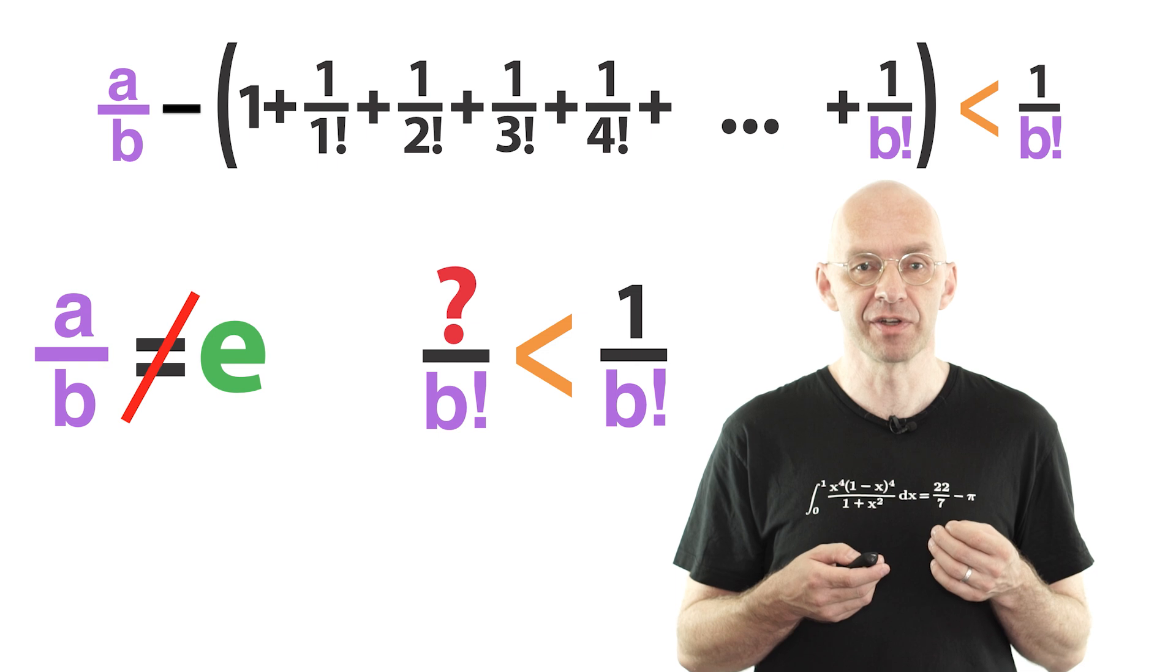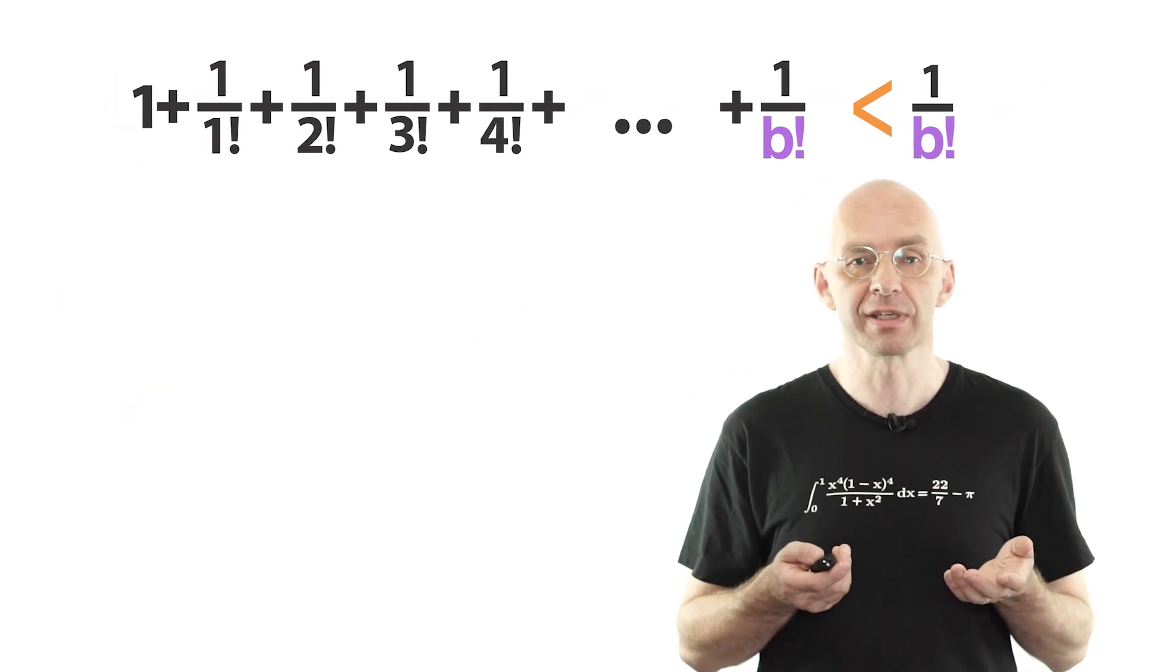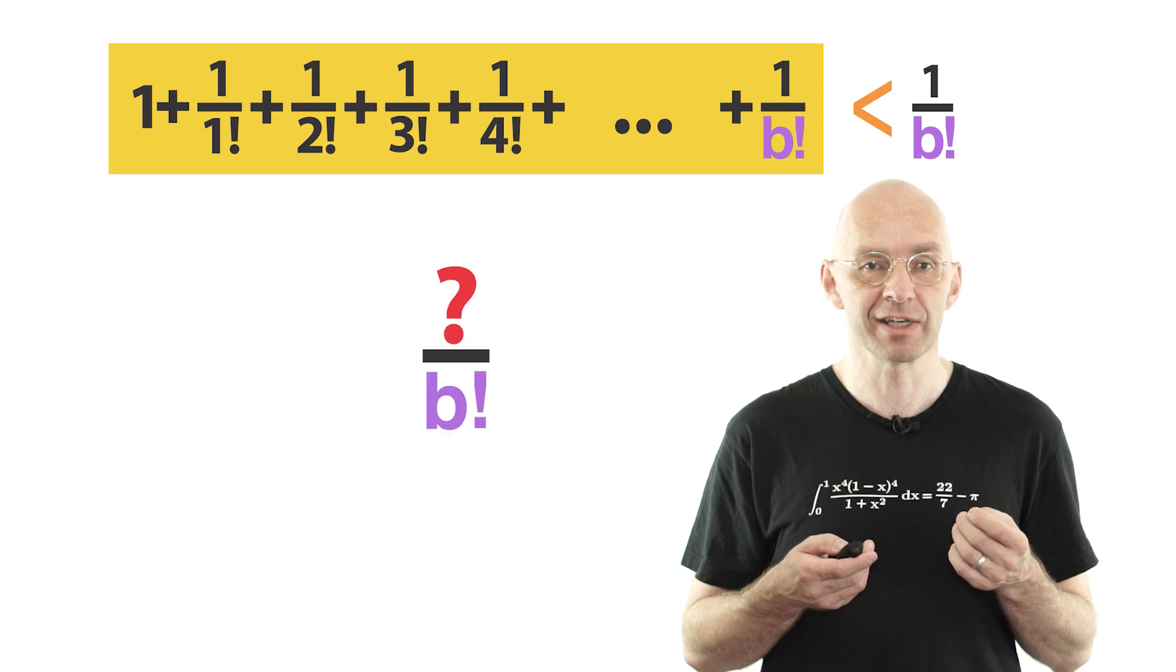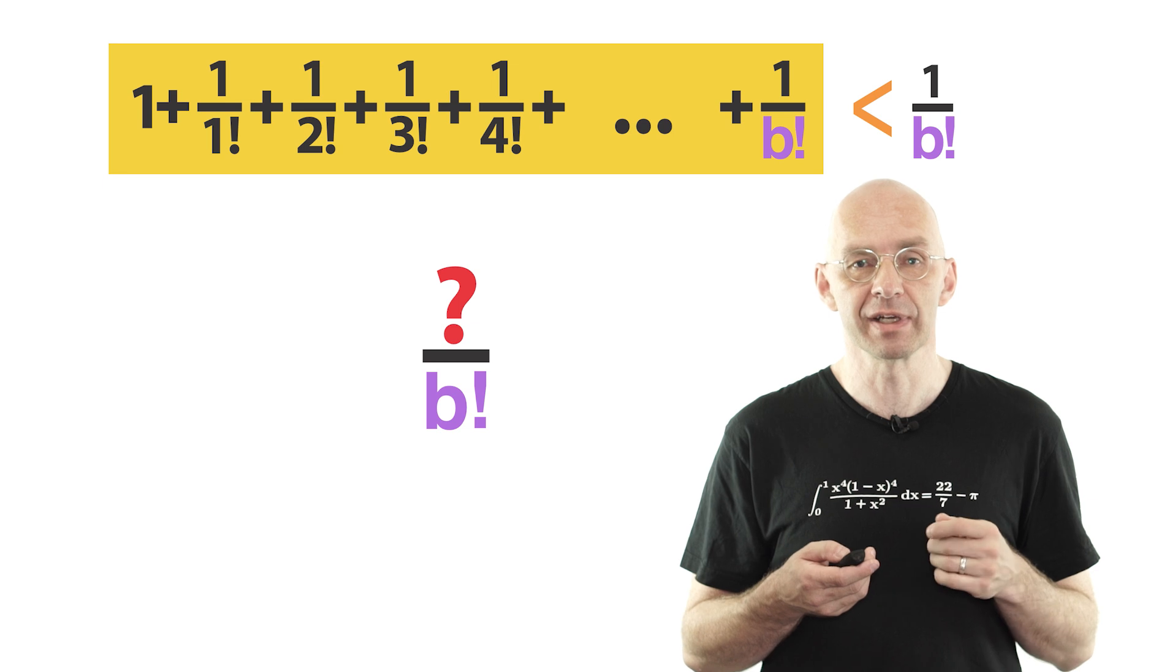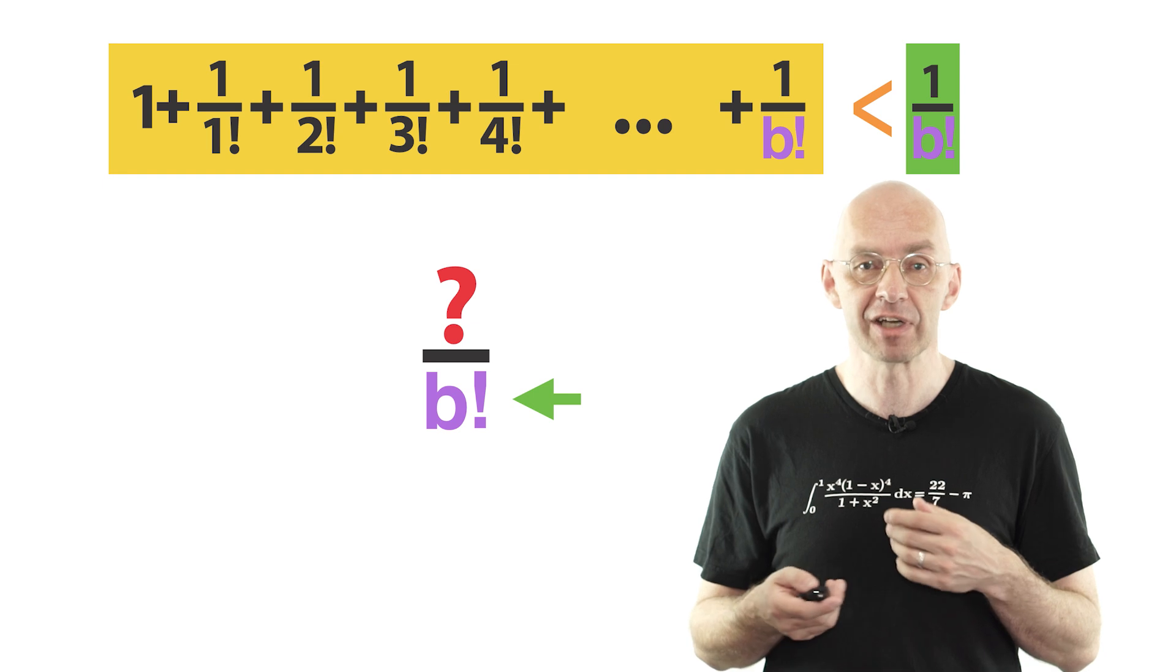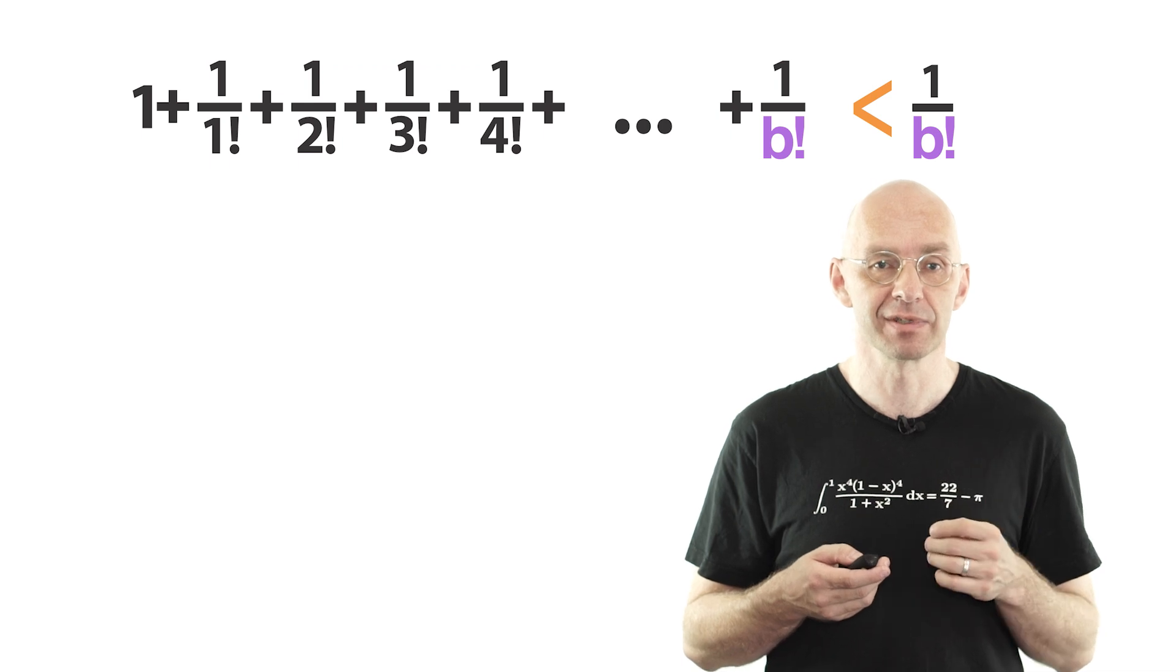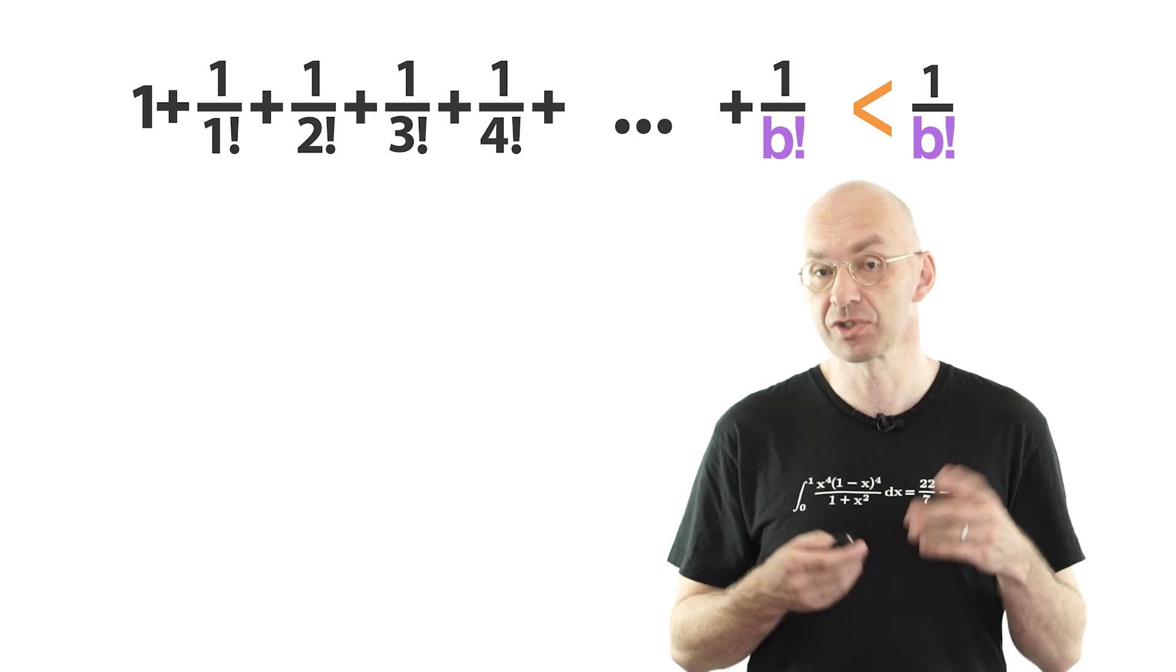Now, you may have to watch this part of the video again to really get what is going on here. What makes this proof work is the fact that the close approximation to e on the left is super close, in the sense that it can be written as a fraction that differs from e in less than 1 over its denominator. Similar super close approximations to π and other irrational numbers also play a crucial role in proving the irrationality and transcendence of these numbers. Actually, a video on transcendental numbers is next on my to-do list. So, stay tuned.